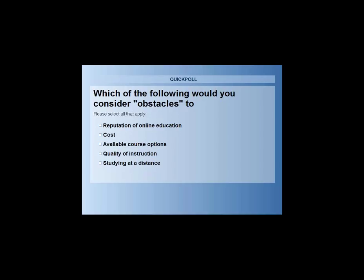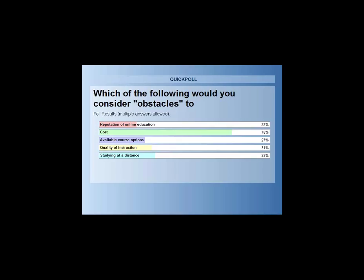We've got about three-quarters of people who have voted and they're still coming in fast. Over 80% have voted now. Let's go ahead and close the poll — we've got a good representation. Not a huge surprise that a lot of folks are concerned with the cost, and we'll address that in the Q&A. Folks are concerned across all the topics: studying at a distance, quality of instruction — we're going to cover those in the next section. Availability of course options — you've just seen a section on that. And the reputation of online education — hopefully we'll overcome any obstacles in the next little bit.